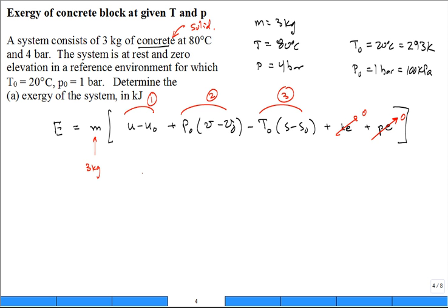Right away, which group of these terms is easy to determine and is equal to zero? The middle term, two, because V minus V naught.